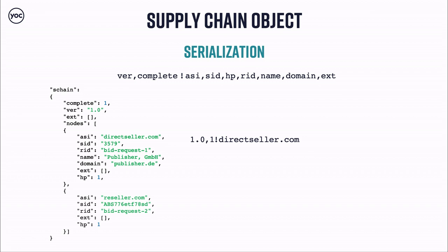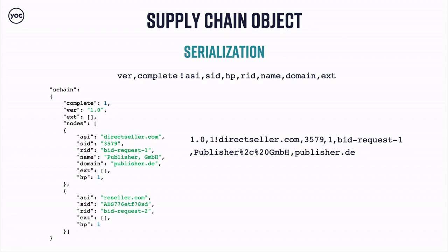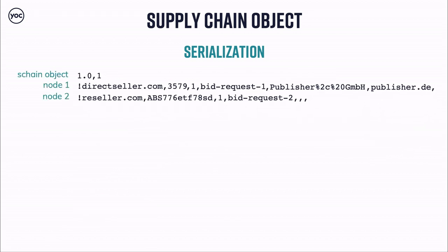Let's compose the serialized value from an example with two nodes — Direct Seller and Reseller. The first part: version 1.0, comma, complete attribute, then exclamation mark separator. First node: advertising system identifier directseller.com, publisher ID 3579, hp attribute, rid (bid request ID), publisher name URL-encoded, publisher domain publisher.de, and an empty extension array. Then another exclamation mark separator for the second node: reseller.com, sid as a long string, hp set to 1, bid request ID two, and three empty values for name, domain, and extension.